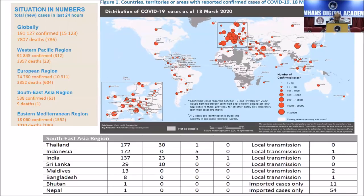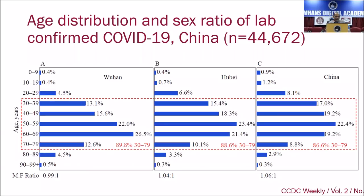The novel coronavirus infection is a disease predominantly of adults. 80 to 90% of people who have got the infection are in the age group 30 to 80. Whether it's Wuhan, Hubei, China, or the rest of the world, this is the age group that gets the infection. Thankfully, children contribute to less than 10%, and it can infect old people as old as 99 or even 100 — there is a case report.